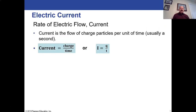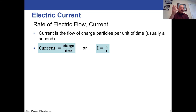The rate of electric flow — defined as the current — is specifically the flow of charged particles per time: the number of coulombs of charge per second. The formula is I = Q / T, where Q is the total charge and T is the time, usually in seconds.